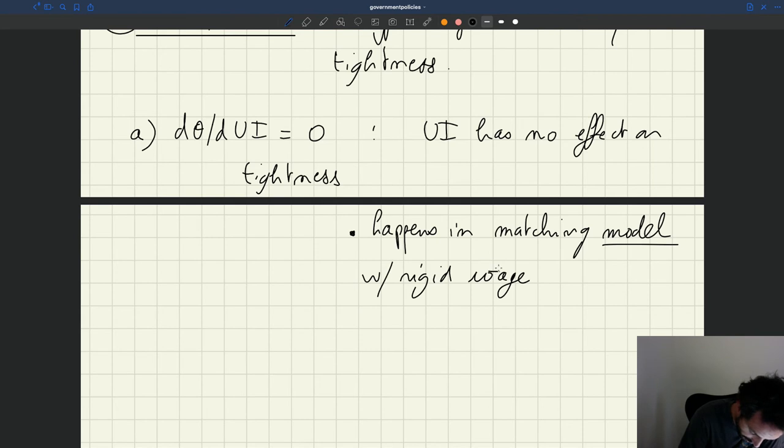So this is clearly a theoretical possibility. It's not something that can never happen. Empirically, how would you assess that? Well, you could look at the effect of tightness directly with the tightness response. You could also measure the micro and macro elasticity. And so if the micro elasticity and the macro elasticity are the same, then this would also tell you that UI has no effect on tightness.